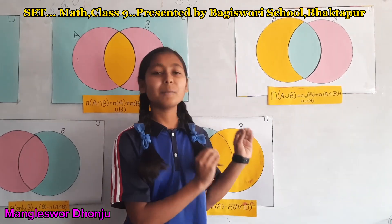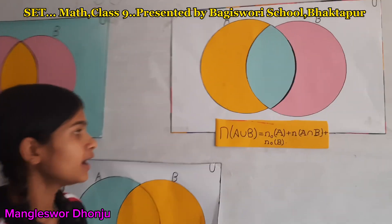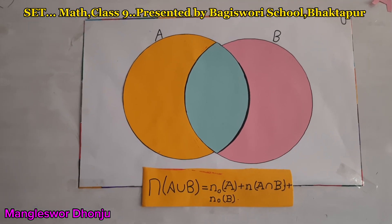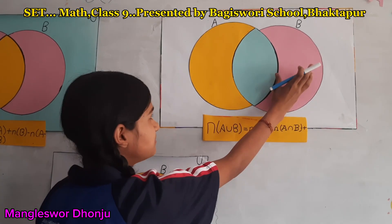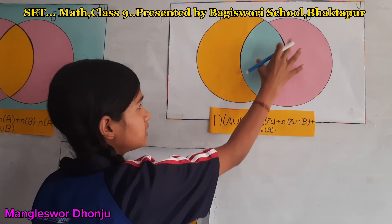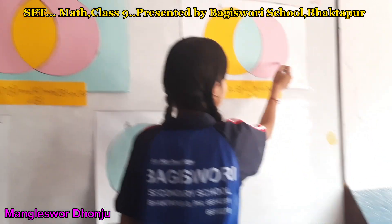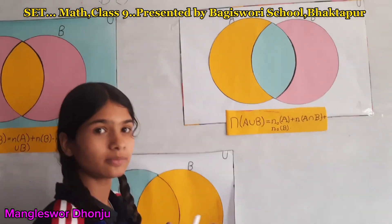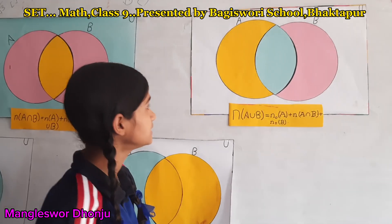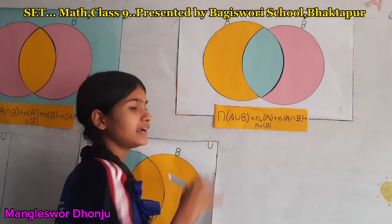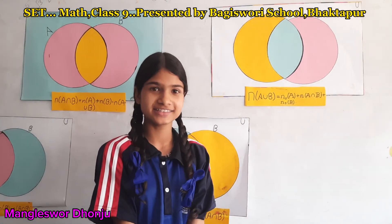I'm presenting the description of the formula: number of A union B. As we know, A and B are the subsets of universal set U. I'm going to represent A union B — the set operations. This is the set of A, this is the set of B, and this is the intersection part. If we add all parts together, it becomes A union B. Hence, the formula is: N(A union B) equals N(A) plus N(A intersection B) plus N(B).